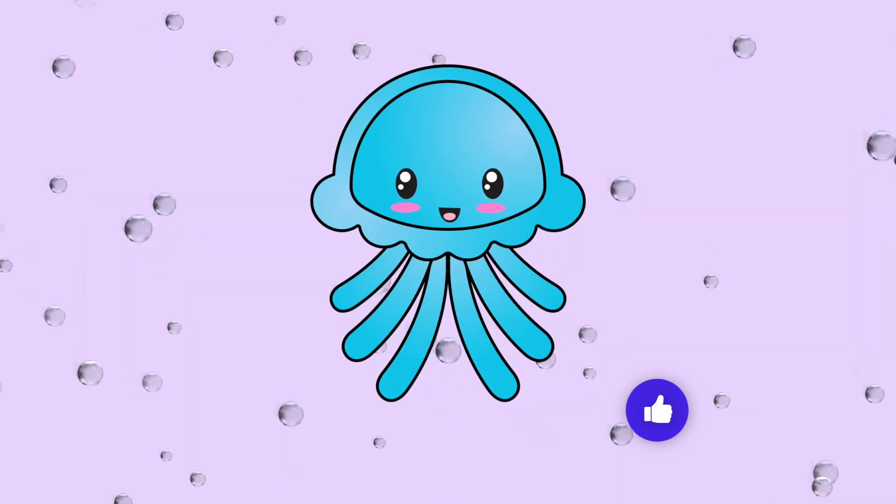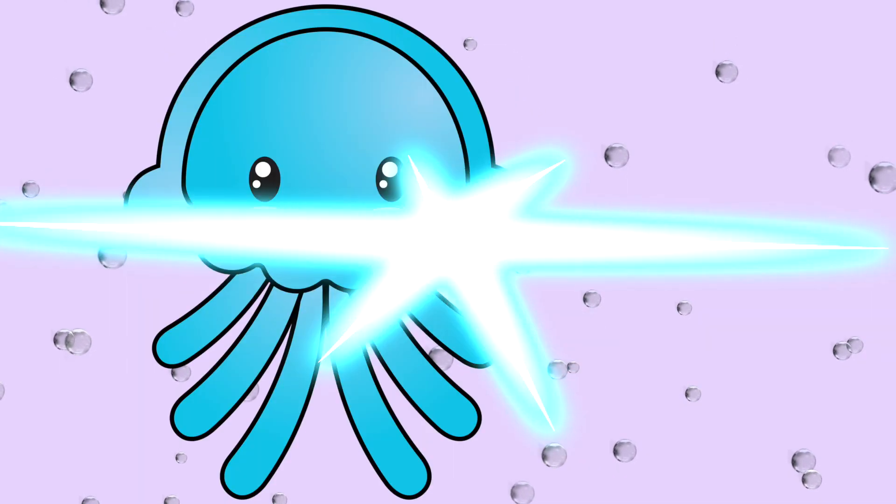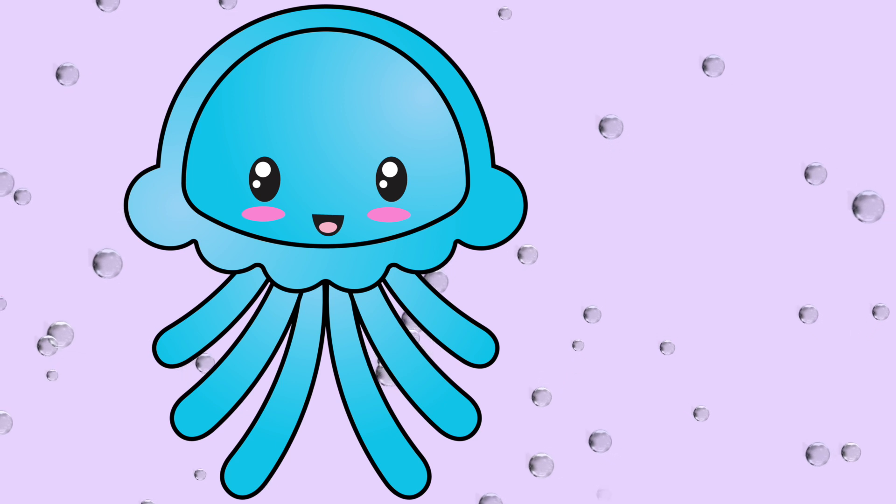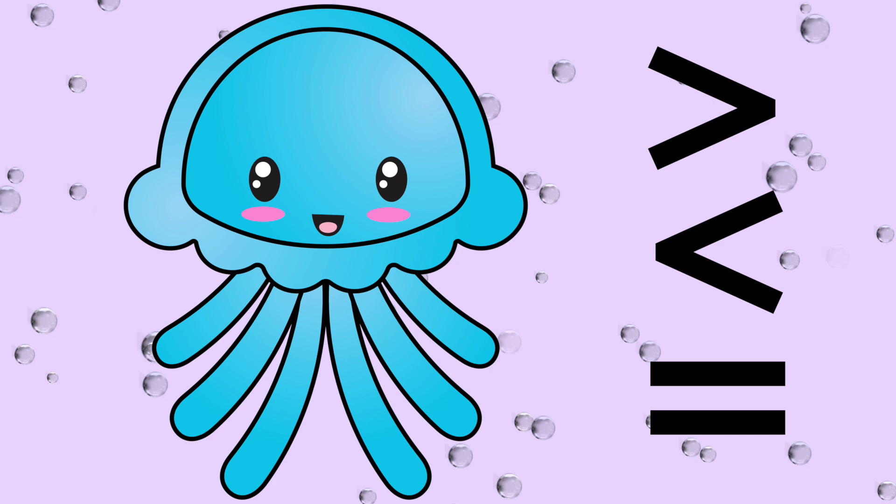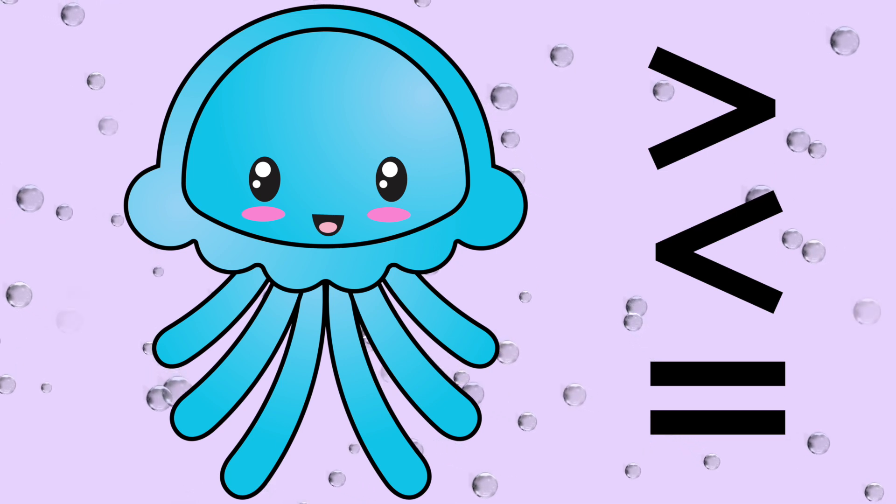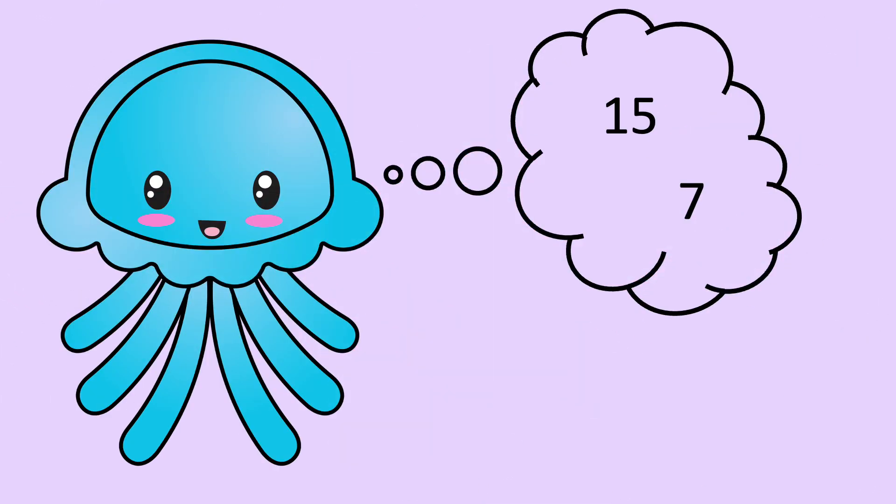Hey everyone, Joey Jellyfish is back. Last time he showed us what it meant to compare two numbers, but the numbers weren't that large. He used number pairs like 15 and 7, 13 and 25, and 87 and 87.